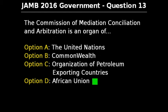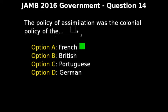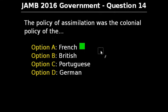Question 14 of JAM 2016 government exam says: the policy of assimilation was the colonial policy of — option A: French, option B: British, option C: Portuguese, option D: German. The correct answer is option A, French. The policy of assimilation was one ideological basis of French colonial policy in the 19th and 20th century. In contrast to British imperial policy, the French taught their subjects that by adopting French language and culture they could eventually become French. So our correct answer is option A.